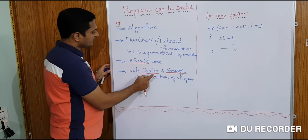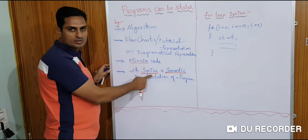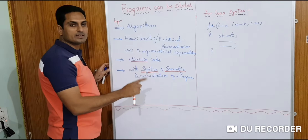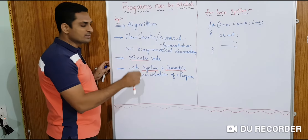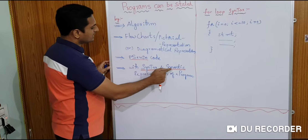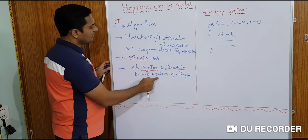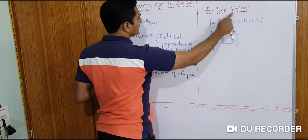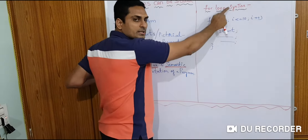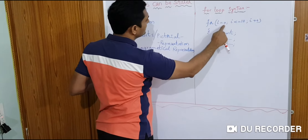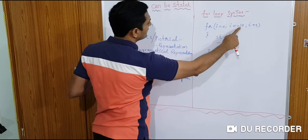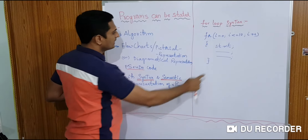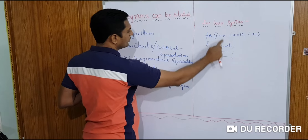Syntax and semantics. Syntax means rules. Semantics means we should not have any spelling mistakes or grammatical mistakes in our program — we write the program in a syntactically and semantically correct way. For example, the for loop syntax is: for (initiation; condition; increment or decrement). This is the for loop syntax.